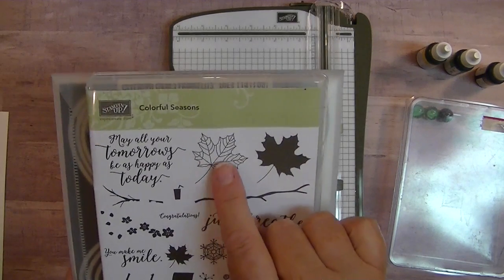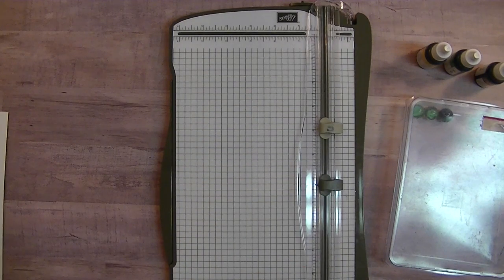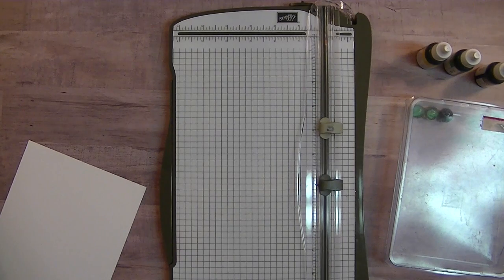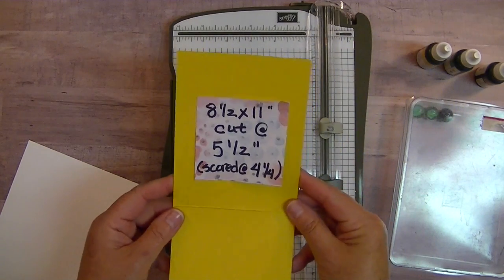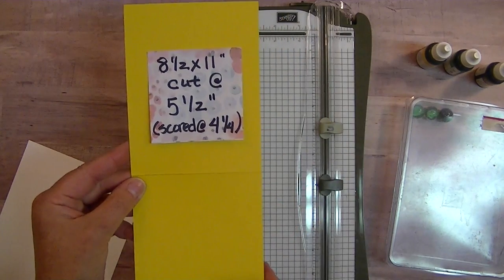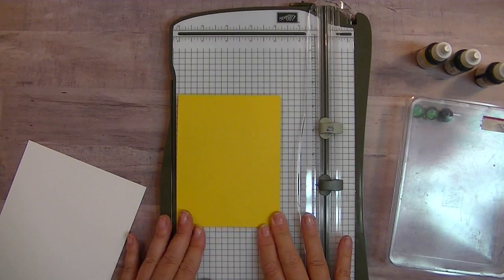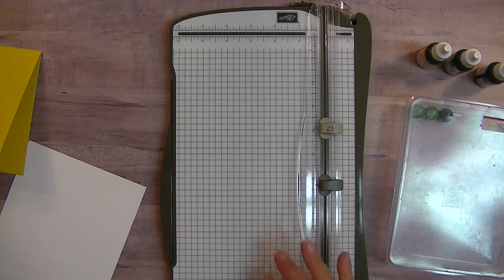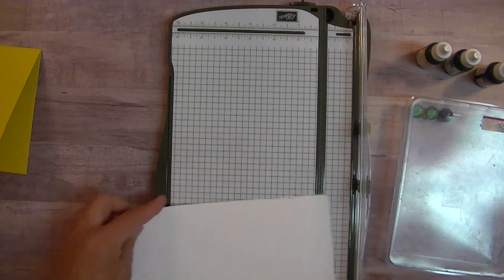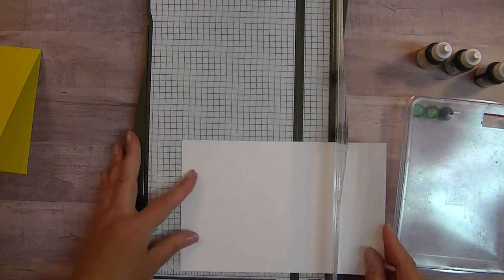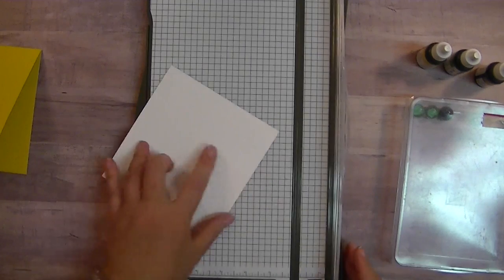I'm using this pretty fall maple leaf here. And that's going to be my focal image. So let's start with my cardstock. I have got an eight and a half by 11 sheet of cardstock that was cut at five and a half. And then I have scored it and I'm going to fold it like so. And that's what's called a standard A2 envelope. My next piece is going to be five and a quarter by four.